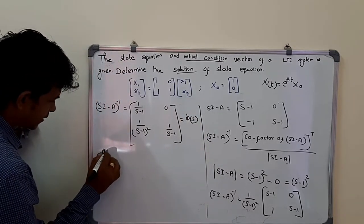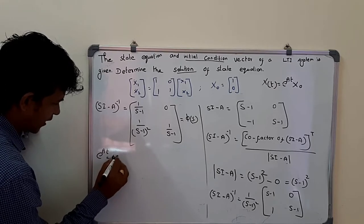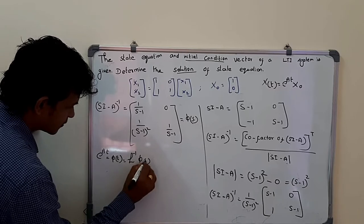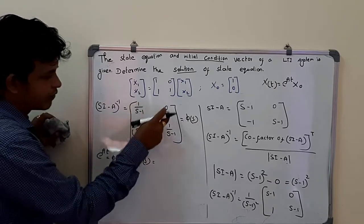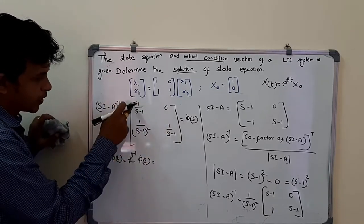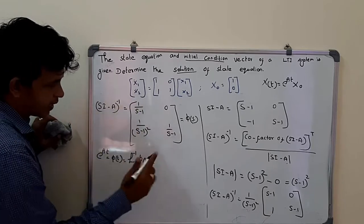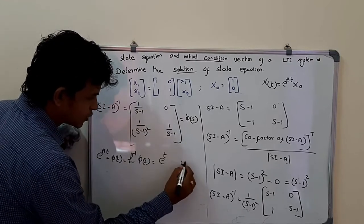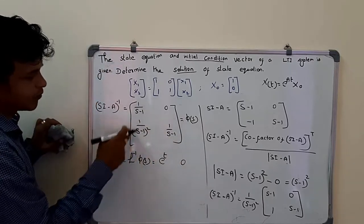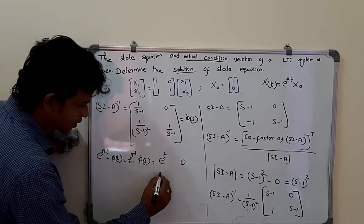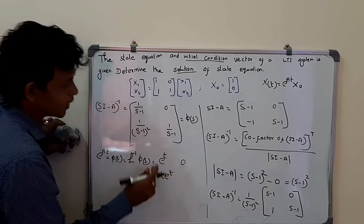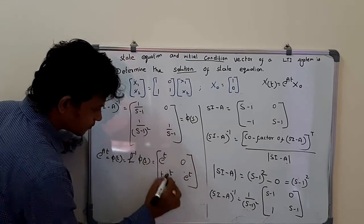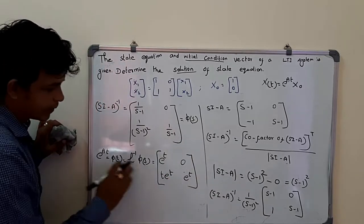Now we find e^(At) = φ(t) = inverse Laplace transform of φ(s). Applying the inverse Laplace transform to each element: L⁻¹{1/(s−1)} = e^t, L⁻¹{0} = 0, L⁻¹{1/(s−1)²} = t·e^t, and L⁻¹{1/(s−1)} = e^t. So e^(At) = [e^t, 0; t·e^t, e^t].